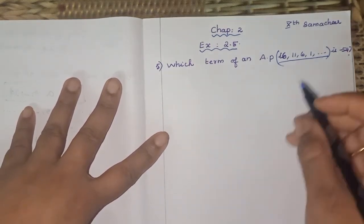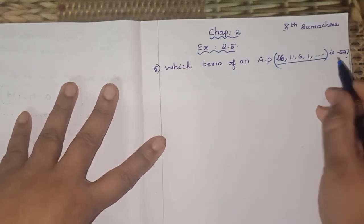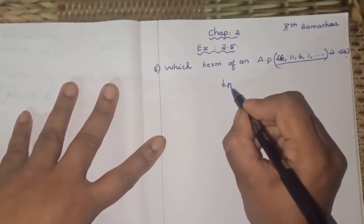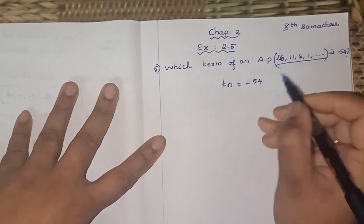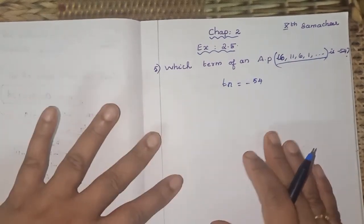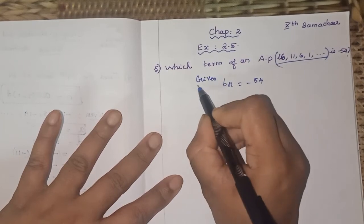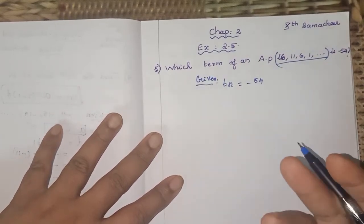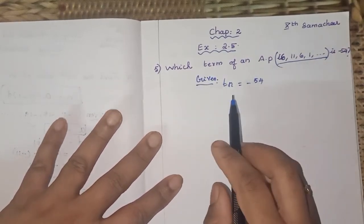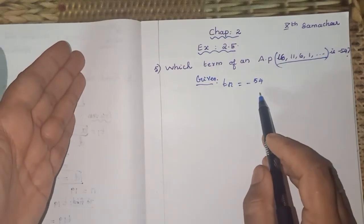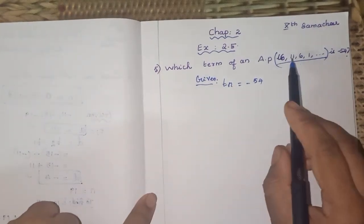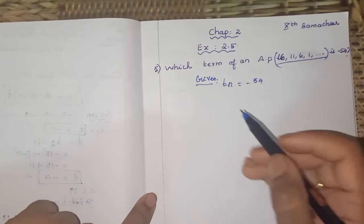So what is given according to the question? T_n is given minus 54. Very important question. So the given, you have to write first: given T_n, which term of an AP, which term we don't know n.